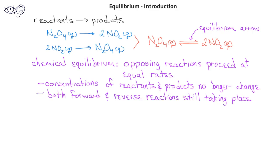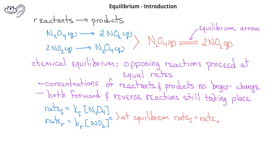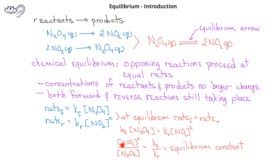In terms of rates, we would see that for the N2O4 reaction, the rate for the forward reaction is the rate constant for the forward reaction times the concentration of N2O4. The rate for the reverse reaction would equal the rate constant for the reverse reaction times the square of the concentration of NO2. Since at equilibrium the forward reaction rate and the reverse reaction rate are equal, that means Kf times the concentration of N2O4 is equal to Kr times the concentration of NO2 squared. When we separate out the concentrations and the rate constants, we get the concentration of NO2 squared on top and the concentration of N2O4 on the bottom, and that ratio is equal to the forward rate constant divided by the reverse rate constant. Instead of using two separate rate constants, we combine these into what we call an equilibrium constant.